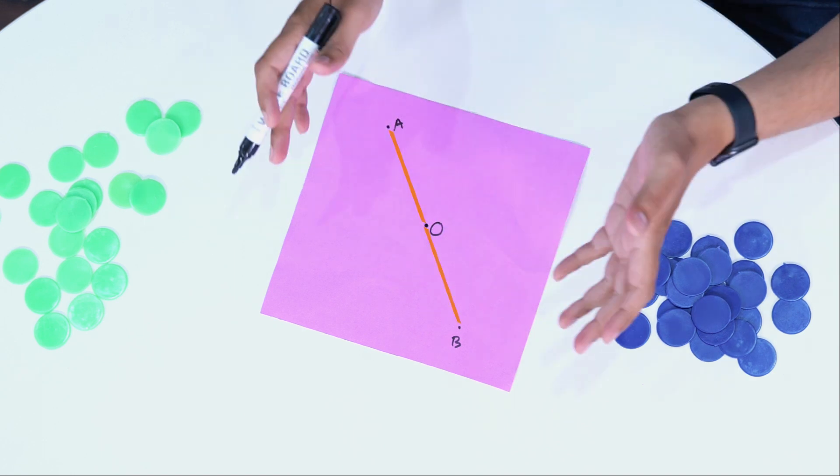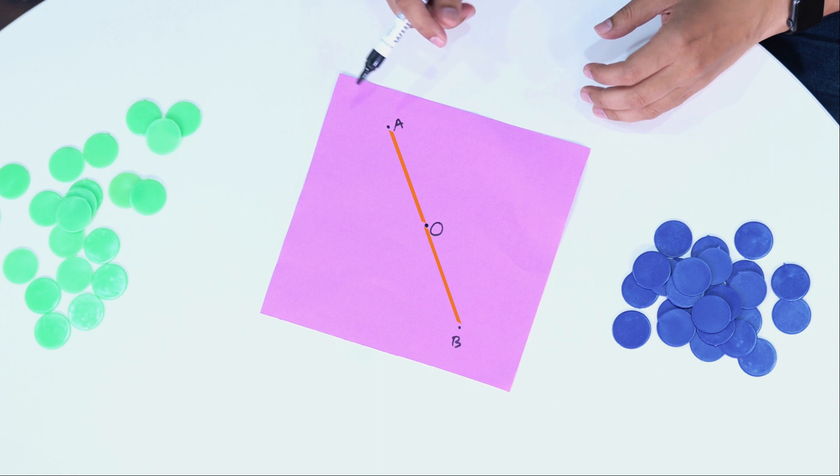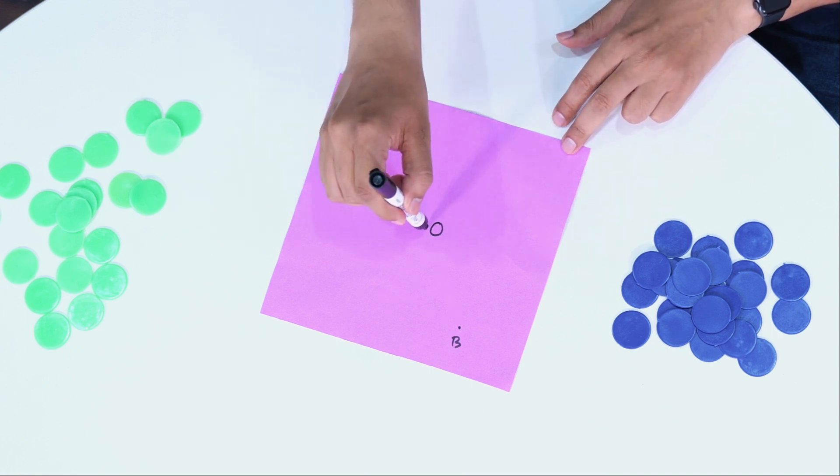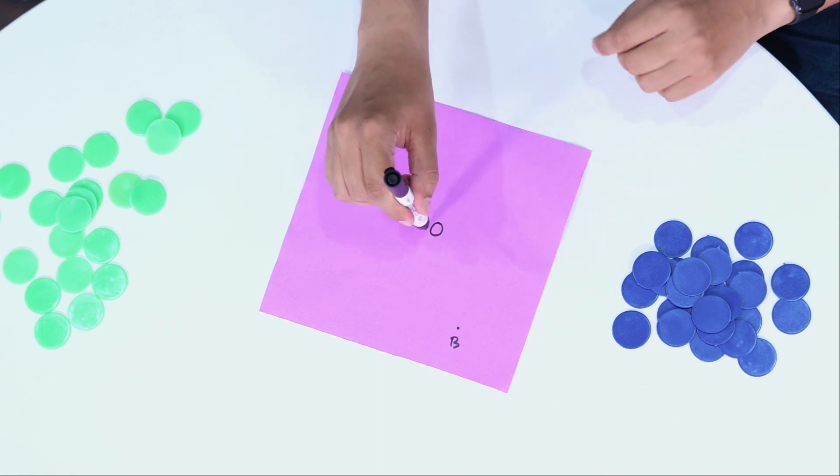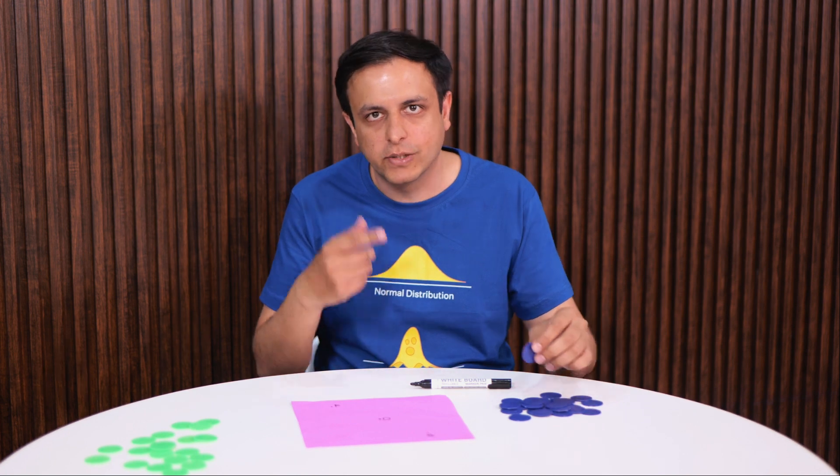Which means that this point O is the point of symmetry for the square. So that means that the same strategy that I used for the circular board should work here.